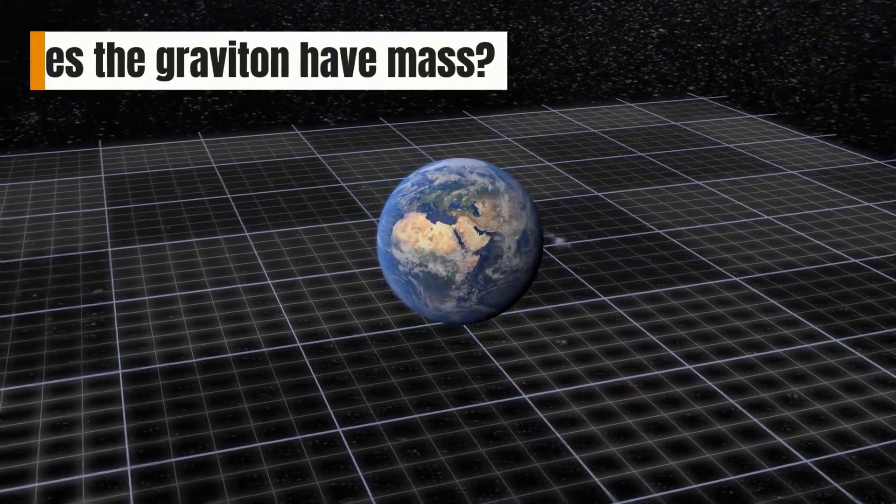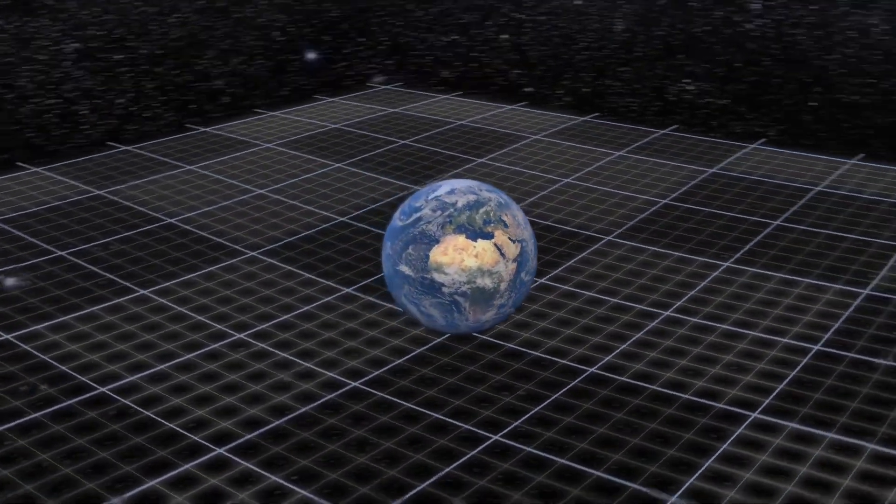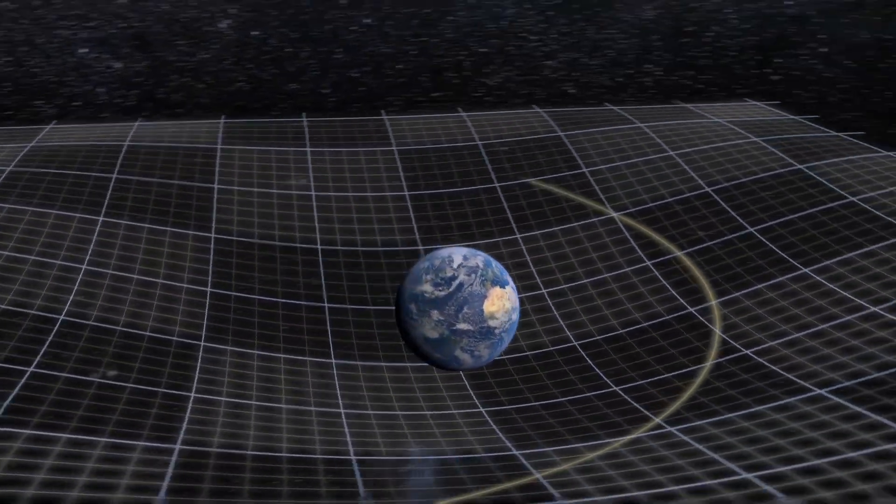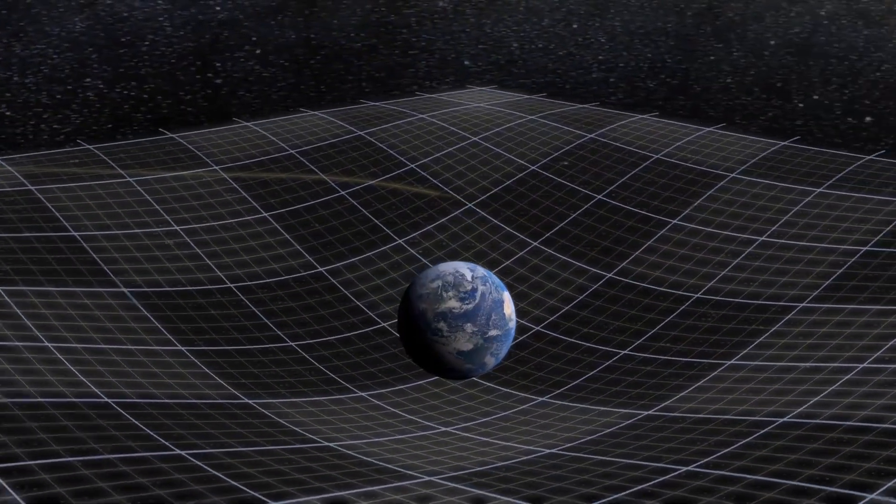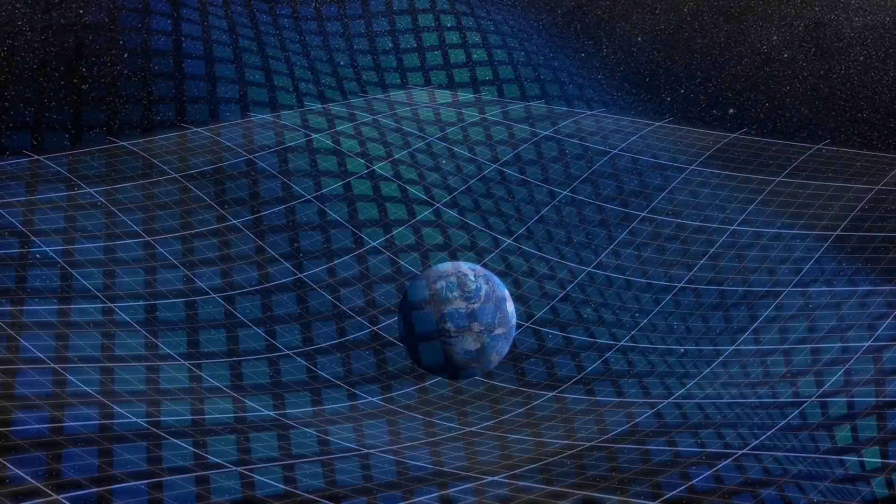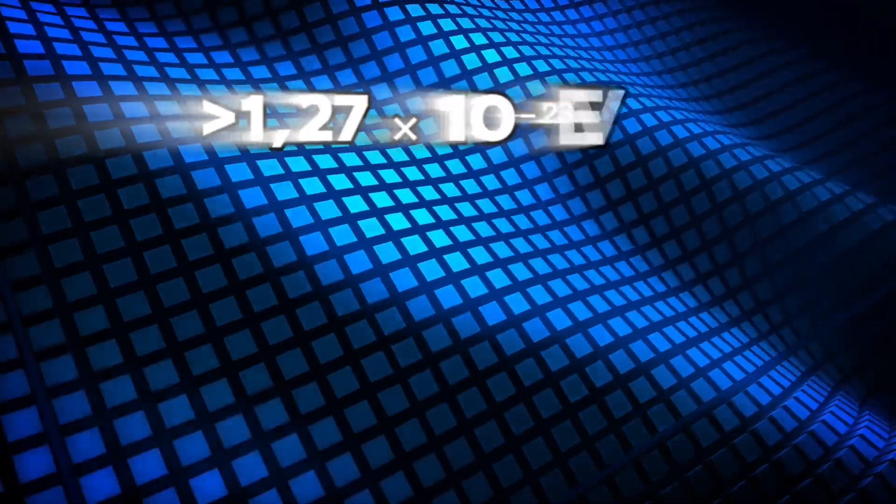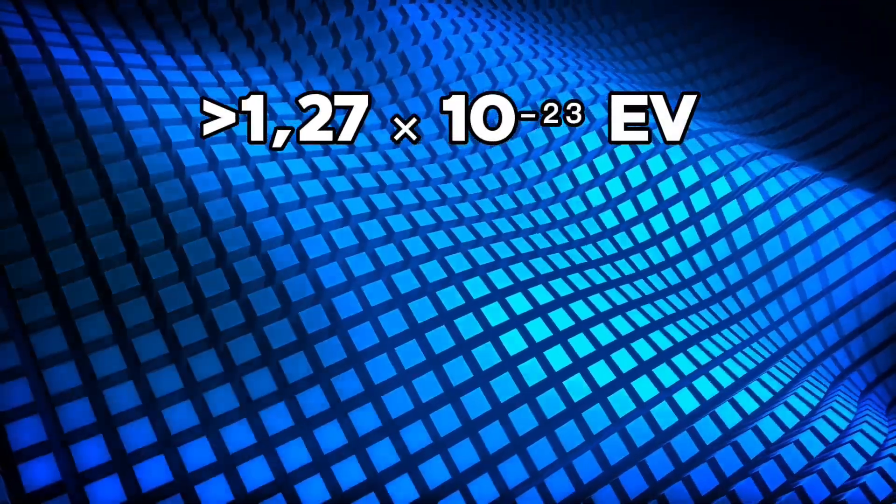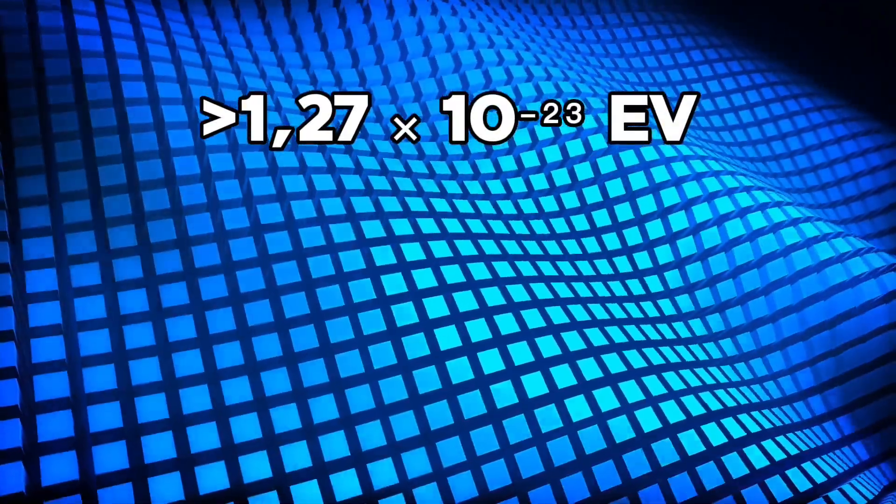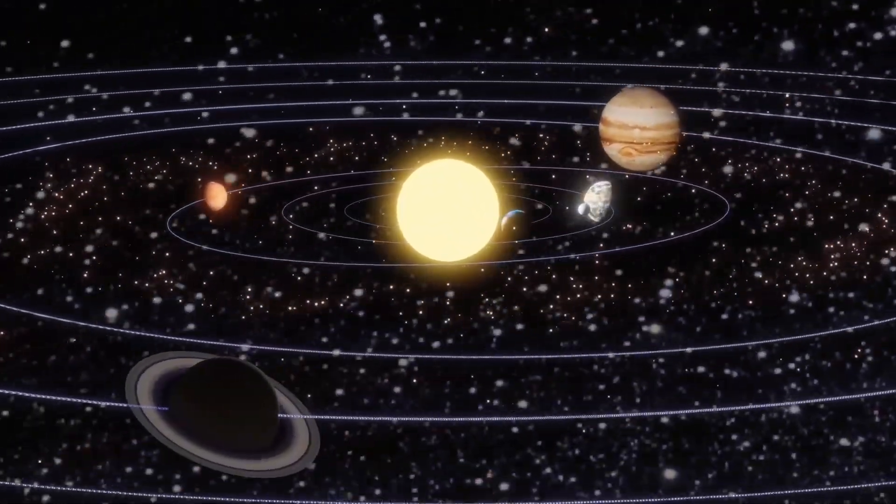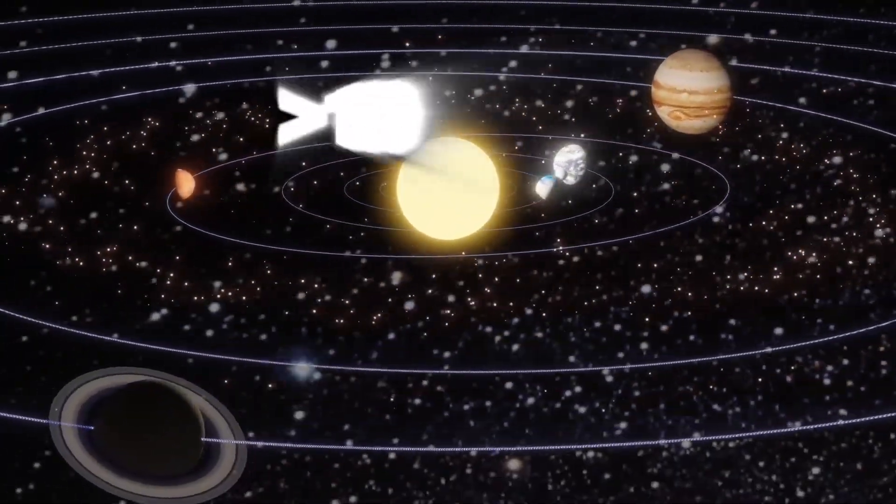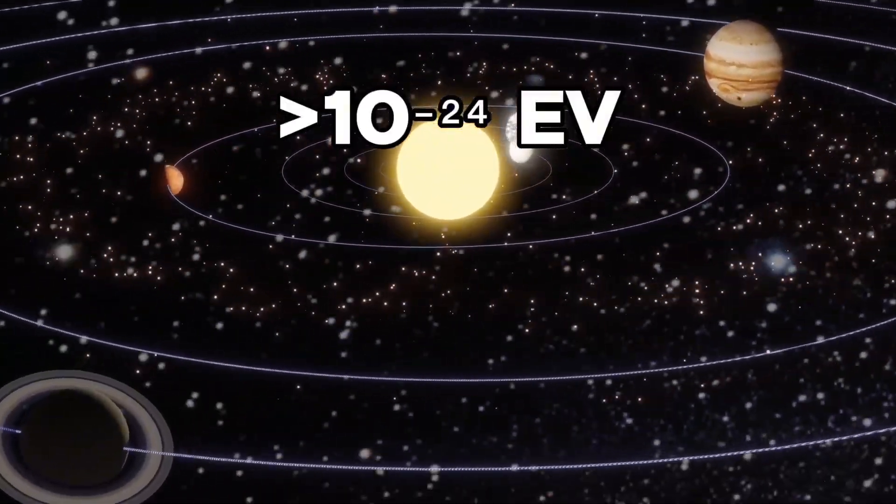If the graviton had even the tiniest mass, gravity wouldn't be infinitely long-ranged, it would fade much faster. This has been tested. Gravitational wave measurements put a limit. The graviton's mass is less than 1.27 times 10 to the minus 23 electron volts. Precise orbital tests in our solar system go even further, less than 10 to the minus 24 electron volts.